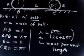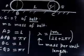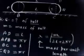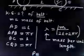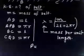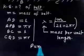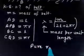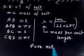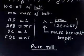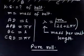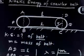This crawler belt is moving with pure rolling, so v = rω. Now let us find the kinetic energy of part BC — the bottom straight segment in contact with the ground.